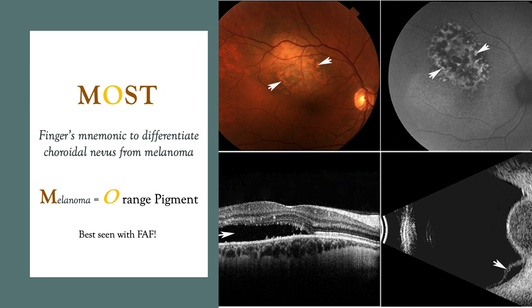On the top left, you see gross orange pigment. It's not hard to see that with indirect ophthalmoscopy and color imaging. However, on the top right, you can see that fundus autofluorescent imaging highlights and hyper-autofluoresces the orange pigment. When you have small amounts of orange pigment, sometimes the fundus autofluorescent images will help you find and diagnose its presence.